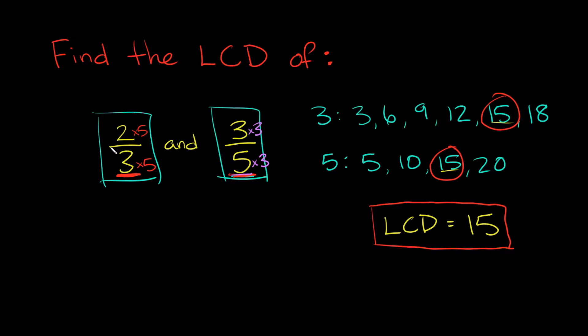And then if I simplified these, we could simplify two-thirds first, right? What's two times five? That's 10. And that's going to go over three times five, which is 15. And then we could do the same thing with this fraction over here, right? What's three times three? That's nine. And then that's going to go over, what's five times three? 15. So now you can see they both have the same denominator. And then you could add or subtract these if you needed to.